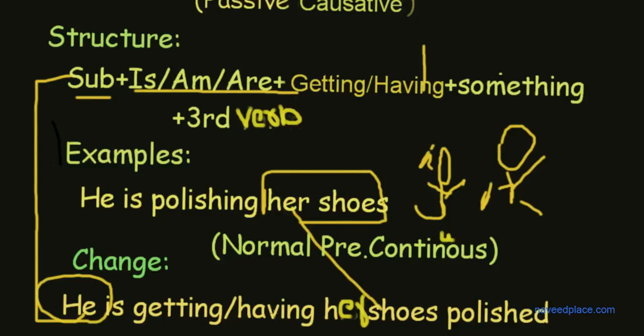And what? He is getting or having her shoes what? I said polish. Definitely, this is the verb fourth form. I want verb third form, so I will change the verb fourth form to verb third form.